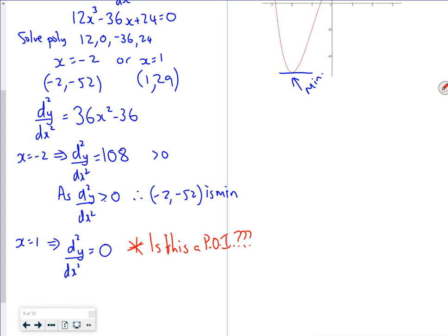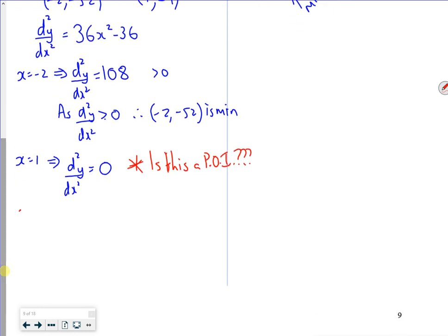To check if it's a point of inflection, we need to check on either side of it. At x = 0.9, d²y/dx² = -6.84. At x = 1.1, d²y/dx² = 7.96. That's less than 0, that's greater than 0 - I've got a sign change.